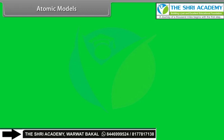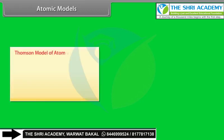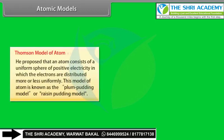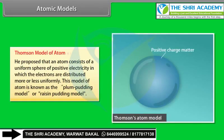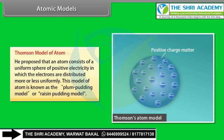Thomson's model of the atom: He proposed that an atom consists of a uniform sphere of positive electricity in which electrons are distributed more or less uniformly. This model is known as the plum pudding model or raisin pudding model.